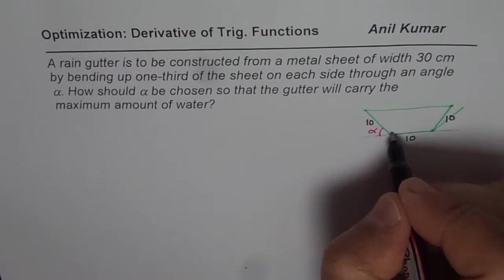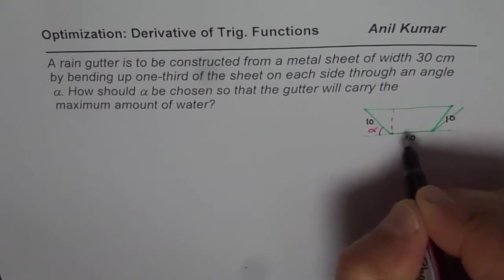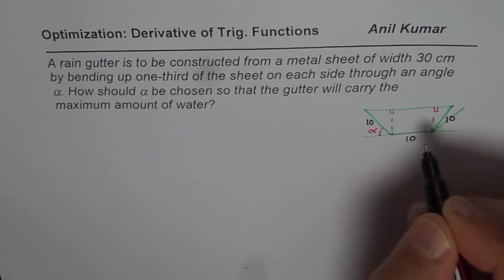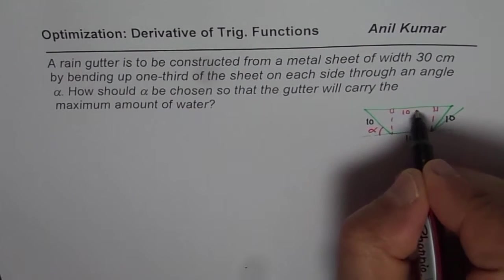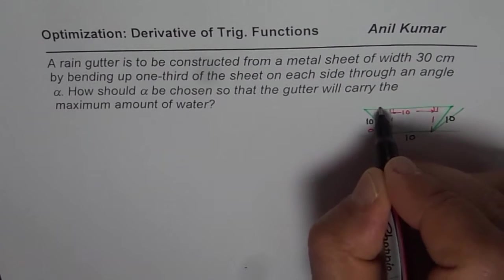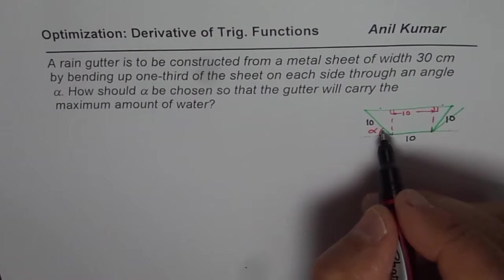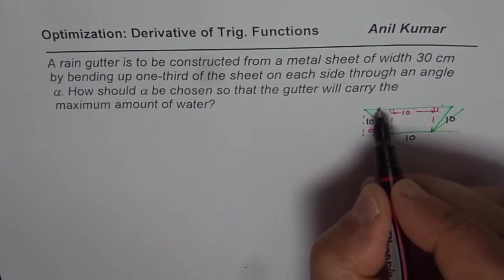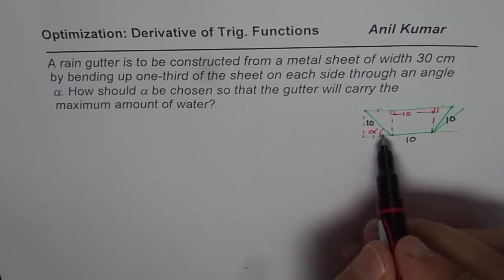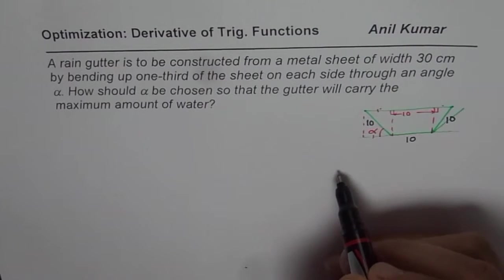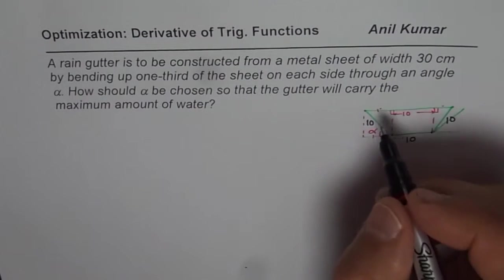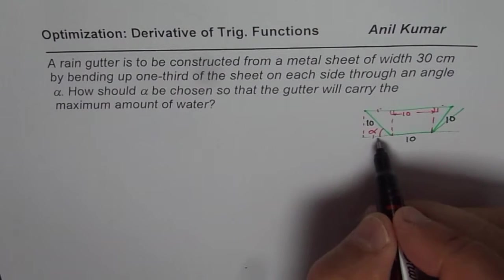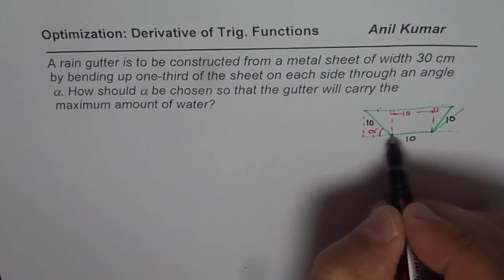What we have here is, I should have made these angles kind of equal. It's good to use light color sometimes, it helps to make a better diagram. So what we will assume here is, one third of 30 is 10. So this side is 10, that side is also 10 and this is also 10.